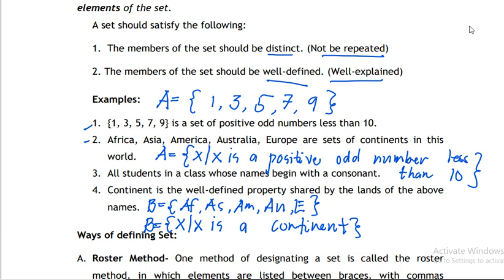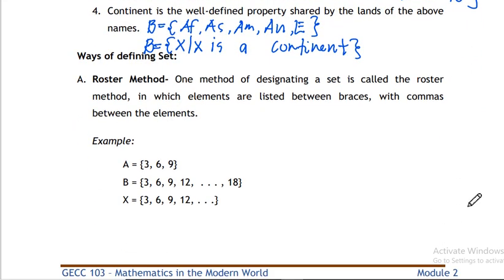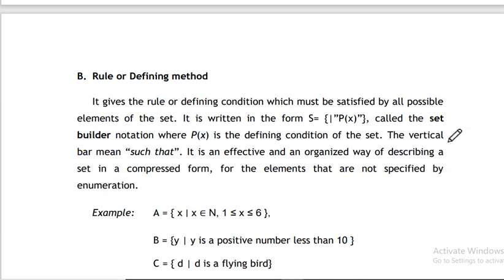Those are the two ways to define a set: the roster method, where you list all elements, and the rule or defining method — also called the set-builder notation. The set-builder notation uses the format {x | x ...}, where the vertical line is read as 'such that.'